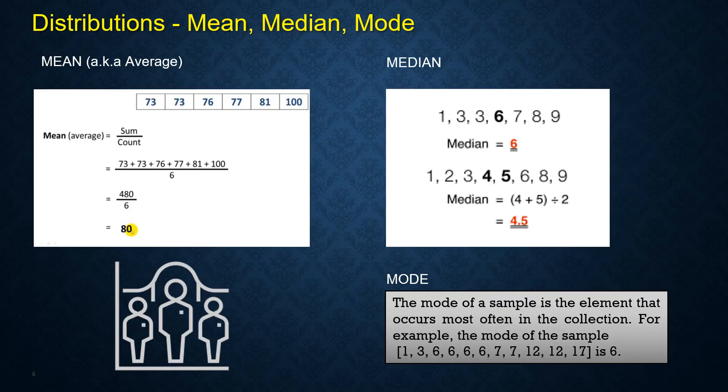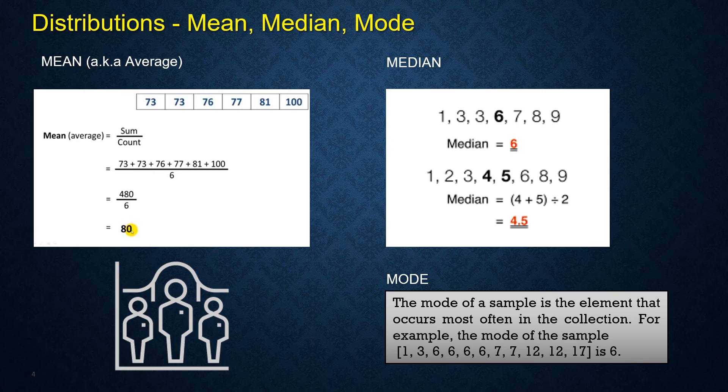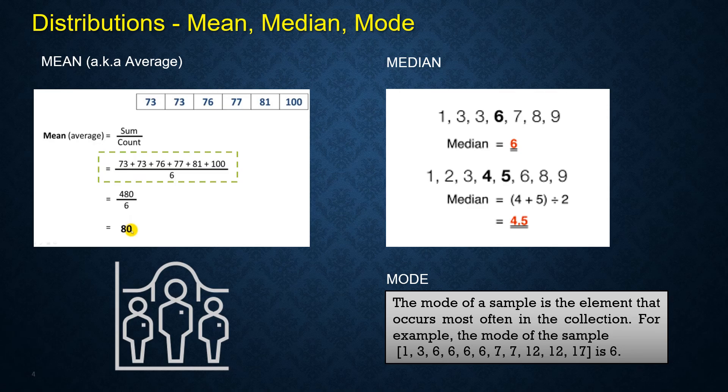Let's look at mean, median, and mode. Mean is nothing but the average value of a given set of numbers. As shown, all we have to do is make sum of all numbers and divide the sum by count of numbers. Median is the middlemost number when sorted in ascending or descending order. Mode is the element which occurs most often in the collection.